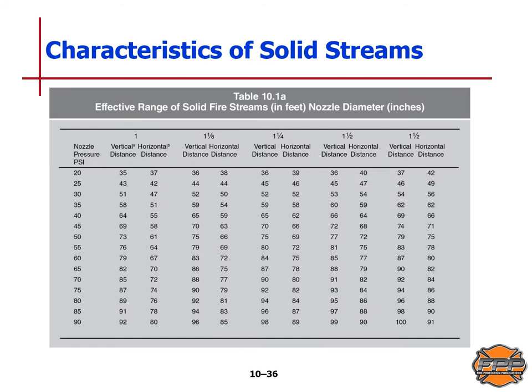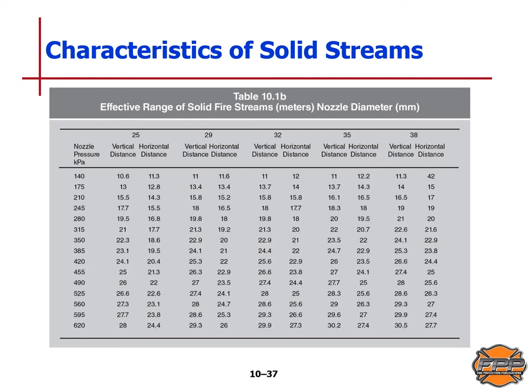Table 10.1 shows the effective range of solid fire streams in feet relative to nozzle diameter in inches, with PSI inside the hose on the left and vertical and horizontal distances for different nozzle diameters across the top. Table 10.1b presents the same data in metric units.